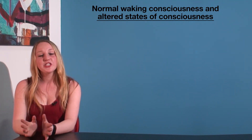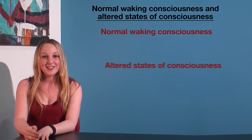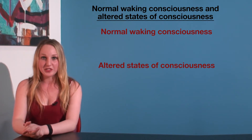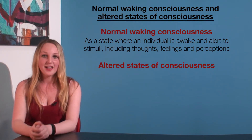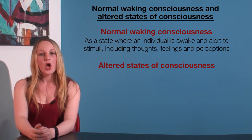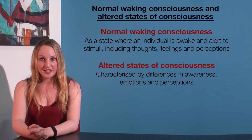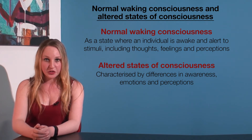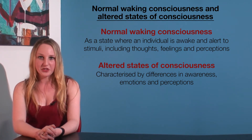In this course, we need to be aware of two different types of consciousness: normal waking consciousness and altered states of consciousness. Normal waking consciousness is a state where an individual is awake and alert to stimuli, including thoughts, feelings and perceptions. Comparatively, altered states of consciousness are characterised by differences in awareness, emotions and perceptions. Any state of consciousness that is not normal waking consciousness is an altered state of consciousness.